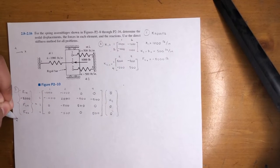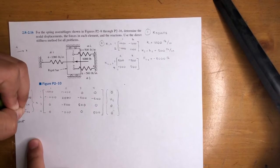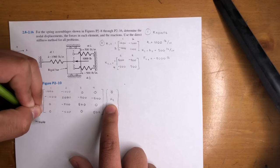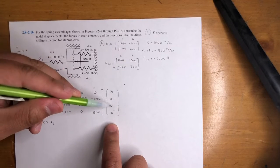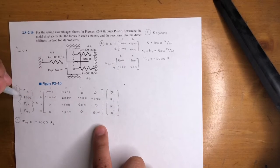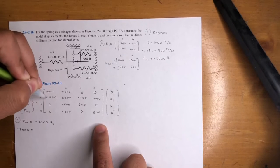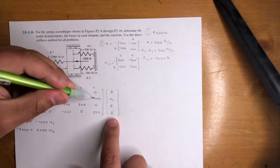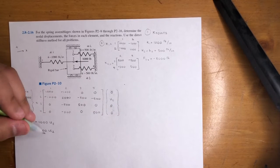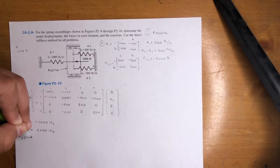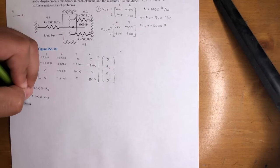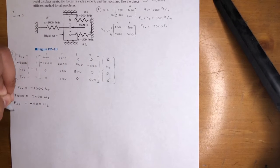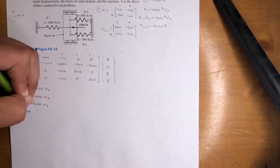Let's create the equations. F1X is equal to 1,000 times 0 minus 1,000 times U2. We're only going to have U2 variables because all the other displacements are zero. Negative 8,000 equals negative 1,000 times 0 plus 2,000 U2, minus 500 times 0, minus 500 times 0. Just by looking at this, we can solve for U2. F3X equals negative 500 U2, and F4X equals negative 500 U2.